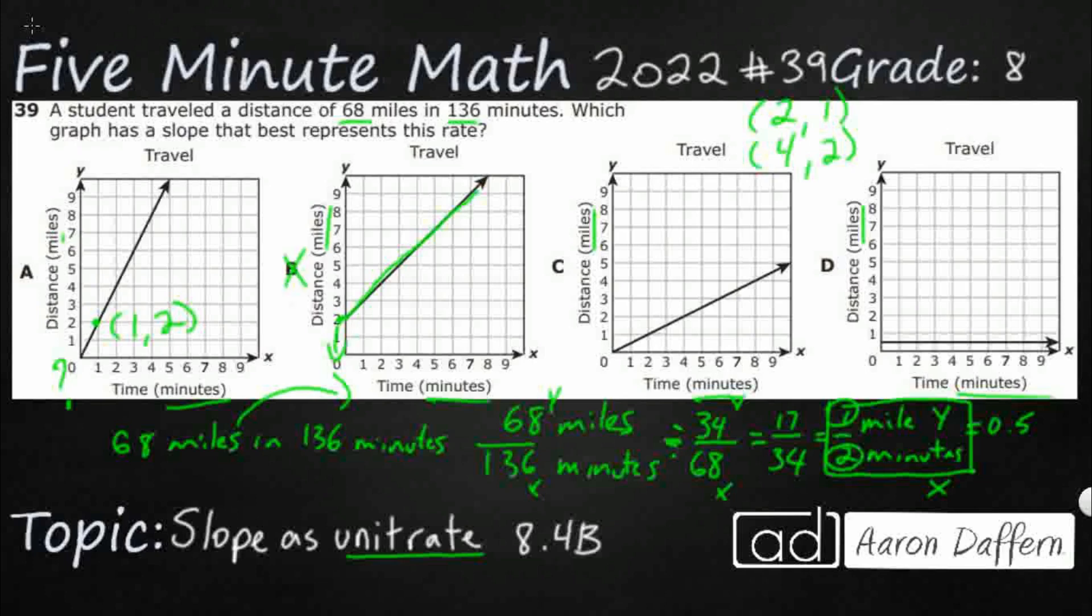C looks like it does start from the origin. There we go. I've got an x of two minutes for every one mile on the y. And if I wanted to look at that, I've got that four, two, just like I was looking for.